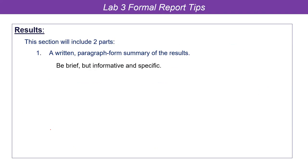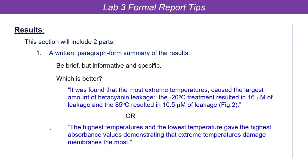The written part: be brief, but you want to be specific, very clear, and informative. Here are a couple of examples of what sentences in your results section might look like. The first says: 'It was found that the most extreme temperatures caused the largest amount of betacyanin leakage. The minus 20 degrees Celsius treatment resulted in 16 micromoles per liter of leakage, and the 85 degrees Celsius resulted in 10.5 micromoles of leakage [figure 2].' The second says: 'The highest and lowest temperatures gave the highest absorbance values, demonstrating extreme temperatures damaged membranes the most.' Hopefully it is really obvious which one is better.